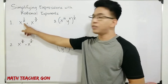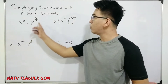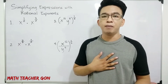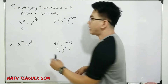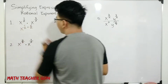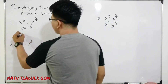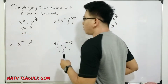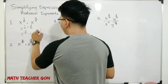Number 1, we are given x raised to 1 half times x raised to 3 over 2. As you can see, we have the exponents 1 half and 3 over 2, and the base is x and x. So simply by using the product law, we need to copy the same base and add exponents. The exponents are 1 half plus 3 over 2. Since the two fractions are similar fractions, we can easily simplify: x raised to 4 over 2, which simplifies to x squared. So the final answer for item number 1 is x squared.